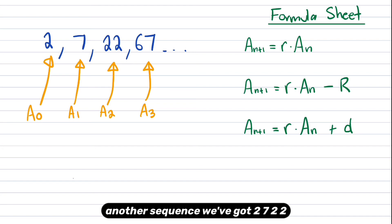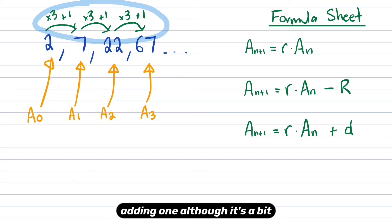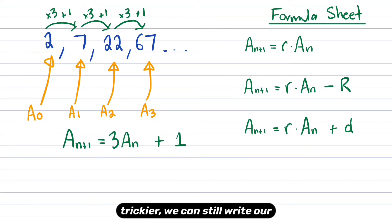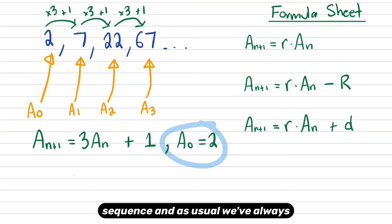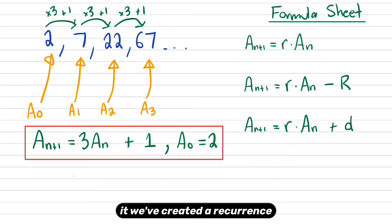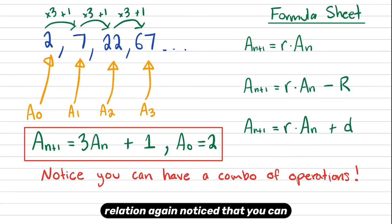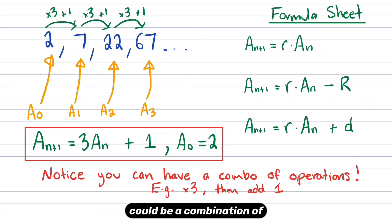Another sequence: we've got 2, 7, 22, 67. This one's a little bit trickier, because what we're doing is multiplying by three and then adding one. We can still write a recurrence relation — just writing a rule to represent what's going on in the sequence. And as usual, we always write a0 at the end, which in this case is two. So we've created a recurrence relation again. Notice that you can have a combination of operations — it doesn't just have to be adding or multiplying.